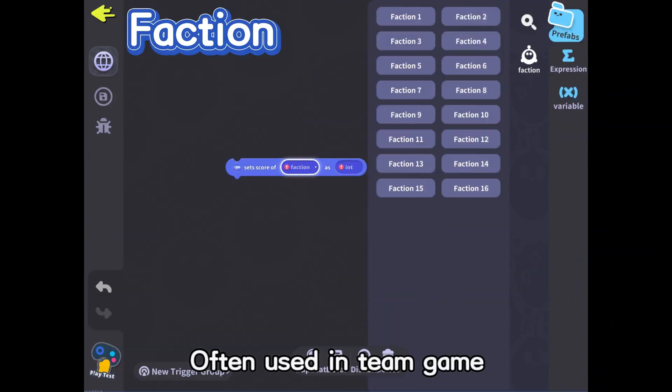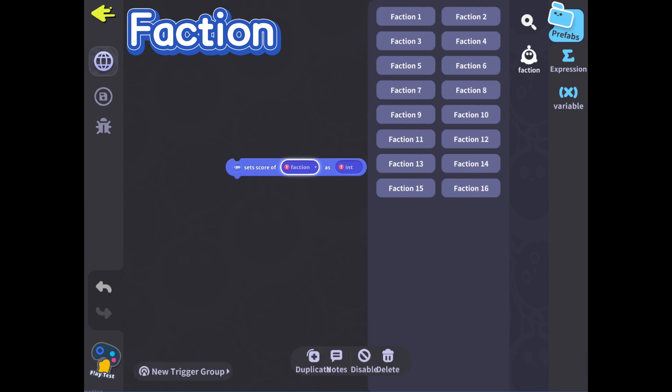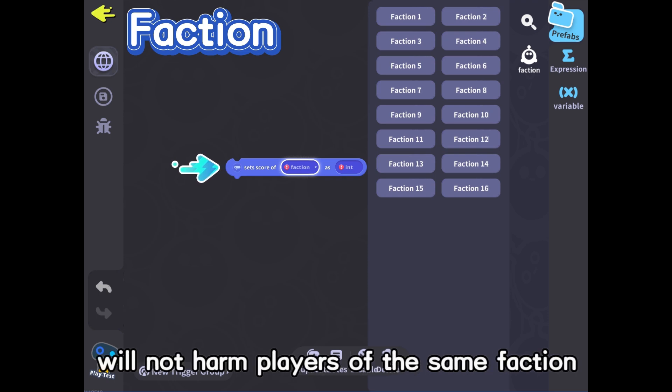Faction: Often used in team games, representing the main body of team scores. Players using props or firearms will not harm players of the same faction.